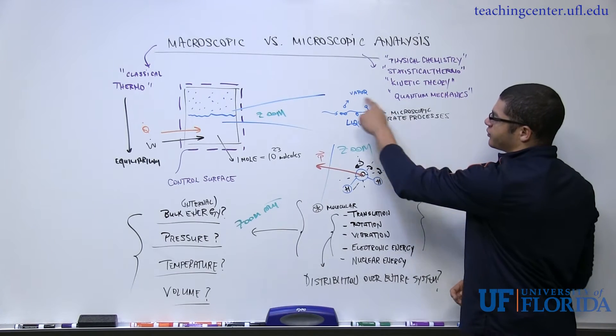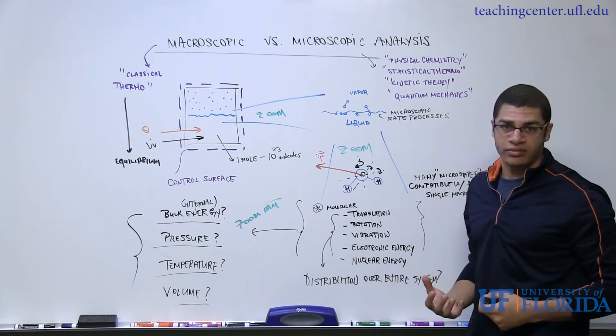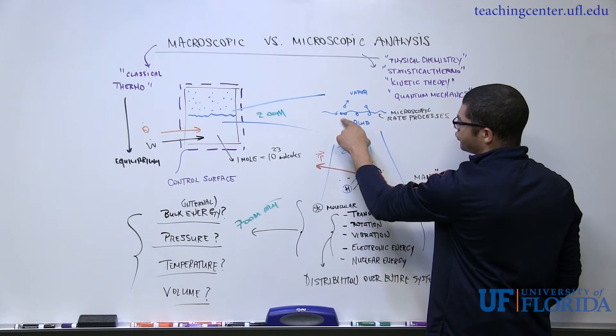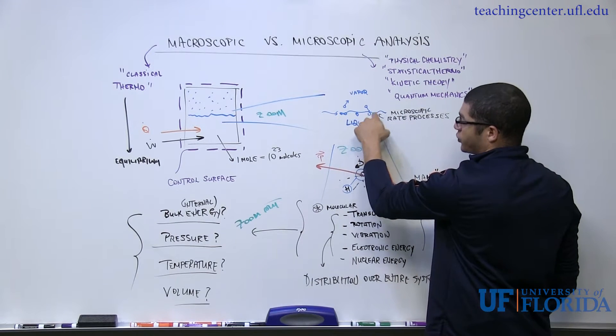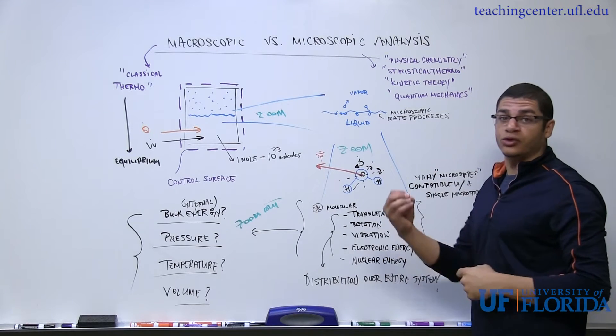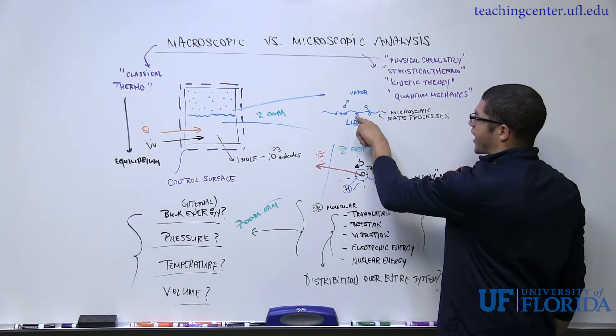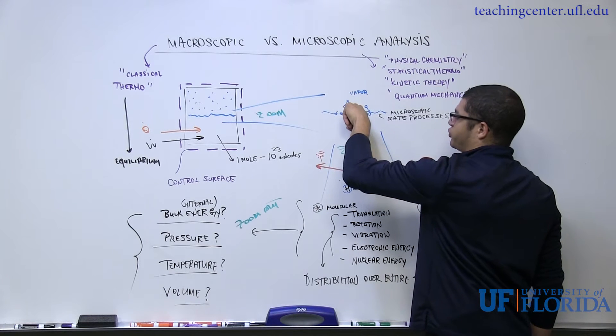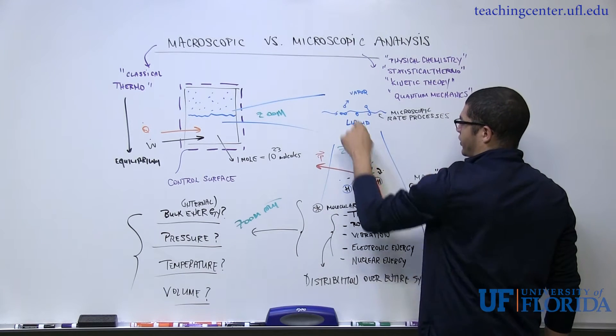Because these molecules have energy at the microscopic level, we know that they're in constant motion. There may be some molecules within the liquid that have enough energy to escape the forces acting on them at the surface, and then they can evaporate or change phase from the condensed phase to the vapor phase.